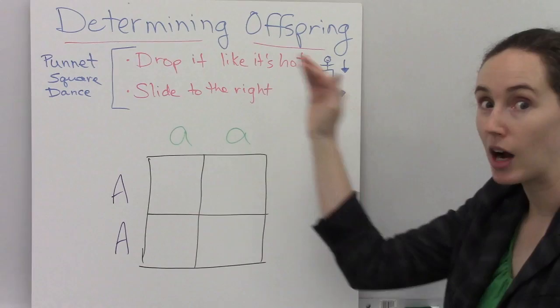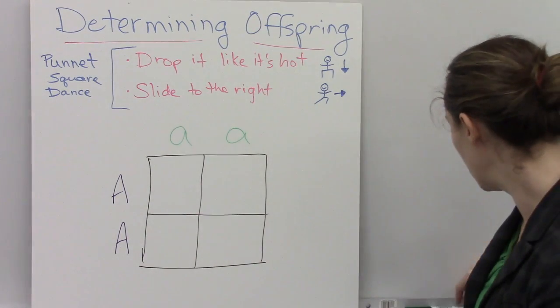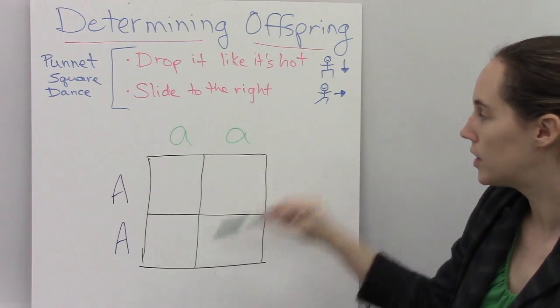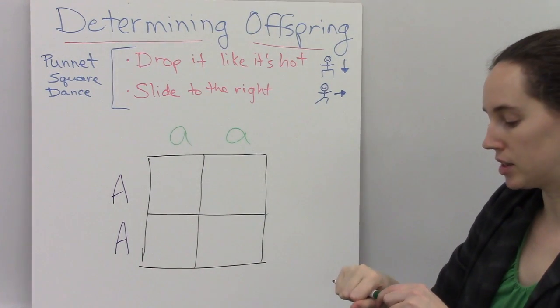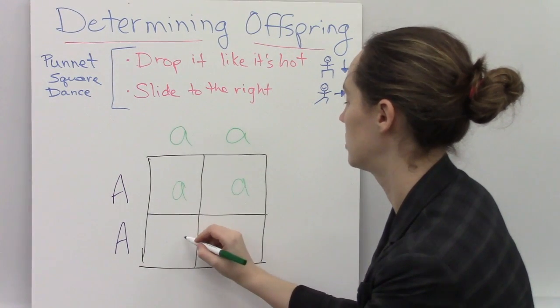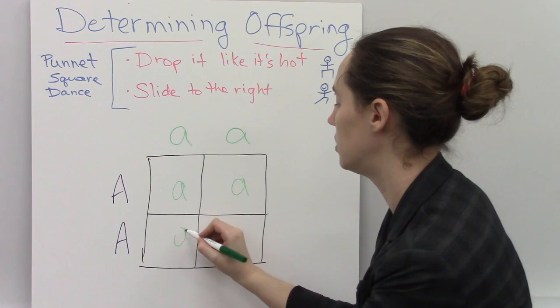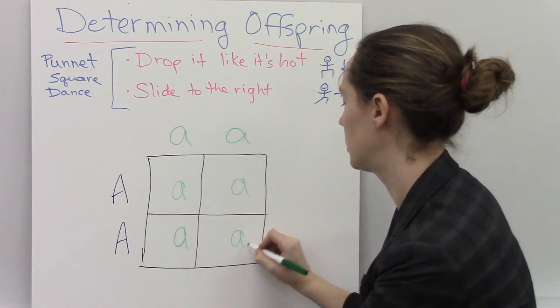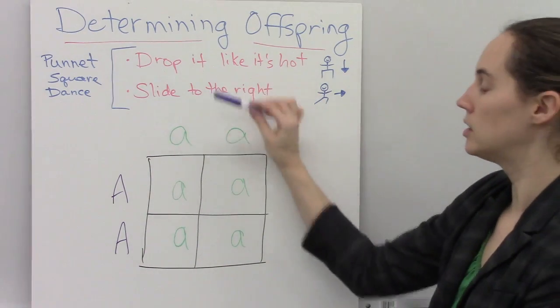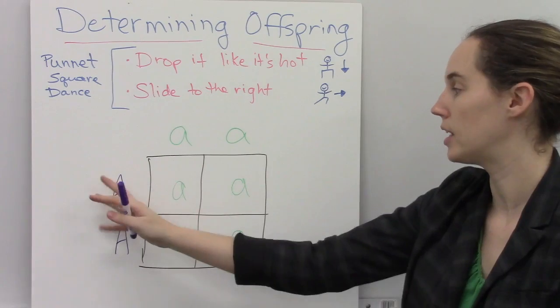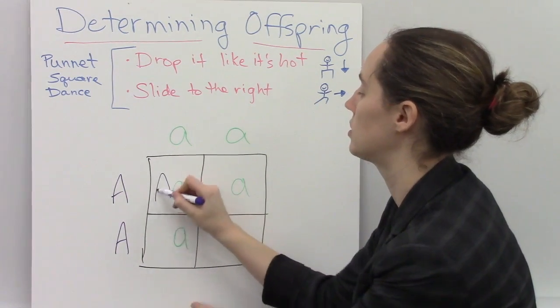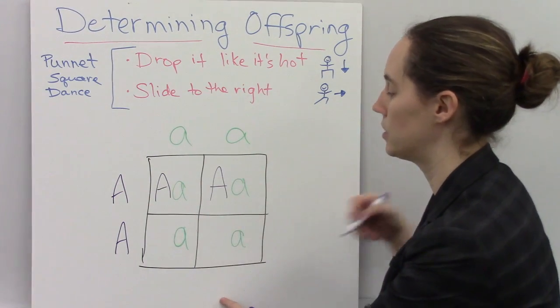So this has to do with how we fill in our Punnett square. So if this is it, I'm going to drop the alleles from the father down into the box, every box below. I'm dropping this one. And then that's the sperm, and then the egg. It's going to meet the egg, so I'm going to slide each of these egg alleles, these alleles in the egg, to the right, sliding to the right.